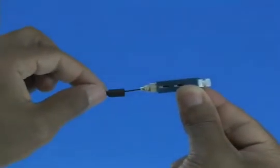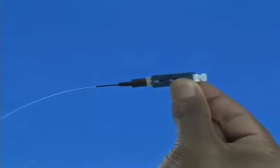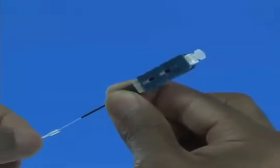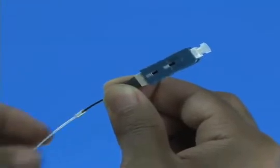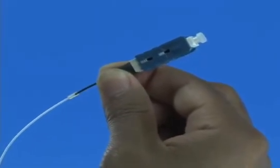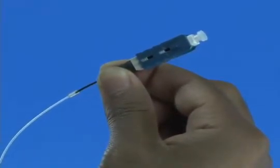Slide the 900 micron boot onto the connector. Slide the clear protective tube toward the connector and attach it to the 250 micron protective tube. Termination is now complete.